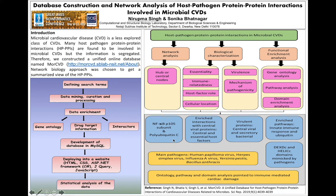Through network analysis, it was found that NF-κB p105 subunit and polyubiquitin-C host proteins were the central nodes in the network. The main pathogens involved in microbial CVDs were human papilloma virus, herpes simplex virus, influenza virus, Yersinia pestis, and Bacillus anthracis. Mainly, the interactions were of viral origin.